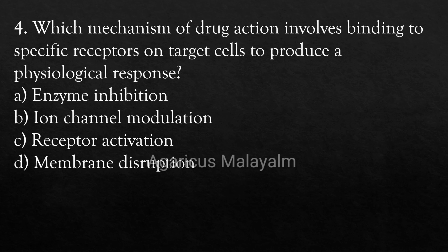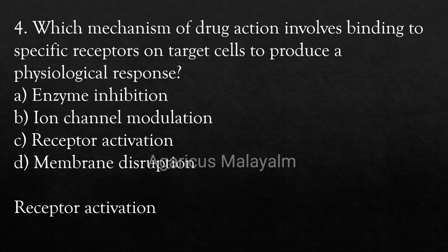Question 4: Which mechanism of drug action involves binding to specific receptors on target cells to produce a physiological response? Option A: Enzyme Inhibition, Option B: Ion Channel Modulation, Option C: Receptor Activation, Option D: Membrane Disruption. Correct Answer: Option C — Receptor Activation.